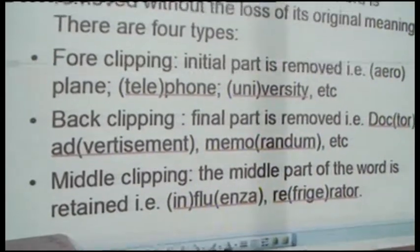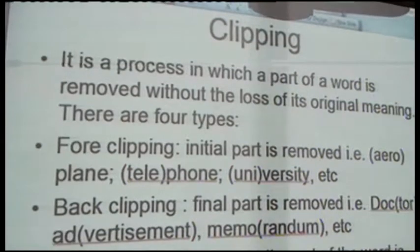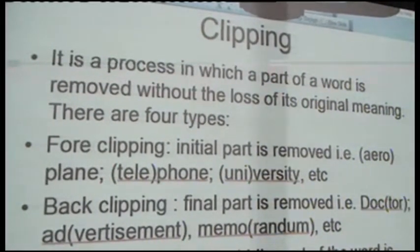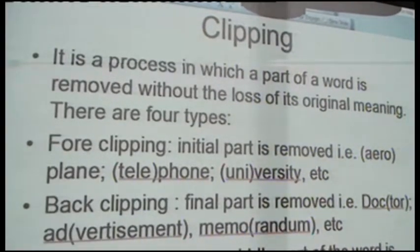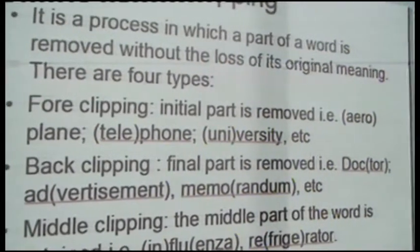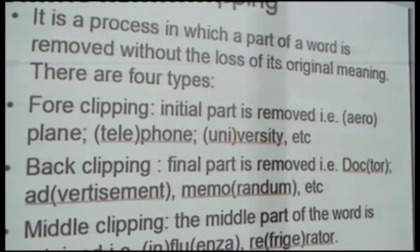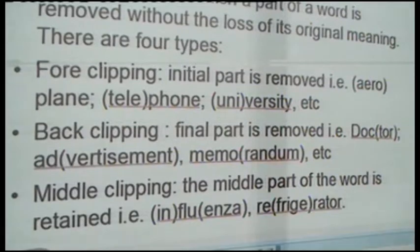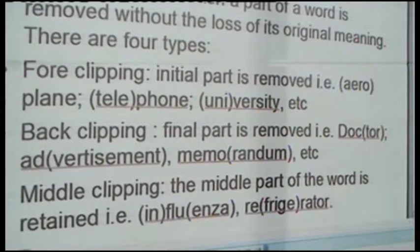Clipping is a process in which a part of a word is removed without the loss of its original meaning. We have four types. The first is fore clipping, where the initial part is removed. For example, in 'aeroplane' we simply remove 'aero' and use 'plane'; in 'telephone' we remove 'tele' to have 'phone'; in 'university,' 'uni' is removed to have 'versity.' The second type is back clipping, where the final part is removed — you call someone a 'doc' instead of 'doctor,' and 'ad' from 'advertisement,' and 'memo' from 'memorandum.'